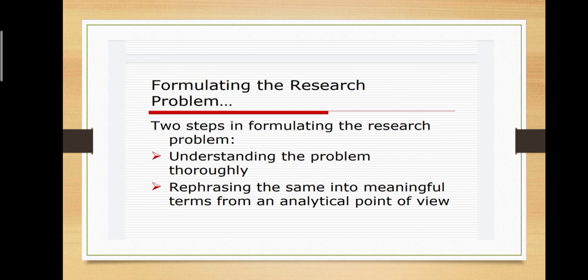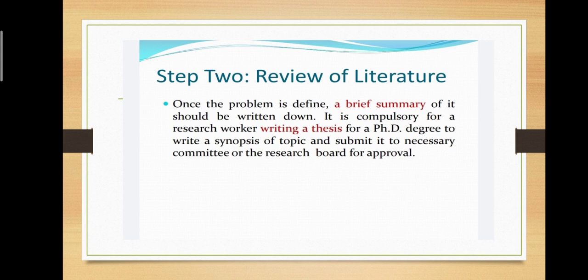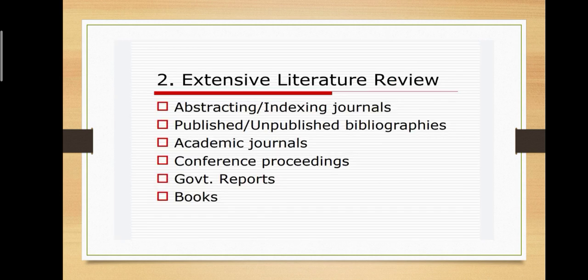The next step is review of literature. Once the problem is defined, a brief summary of it should be written down. It is compulsory for a research worker writing a thesis for a PhD degree, to write a synopsis of topic and submit it to necessary committee or the research board for approval.